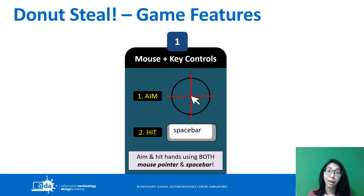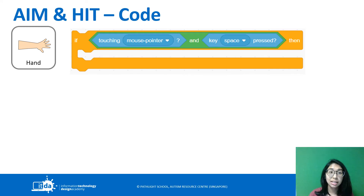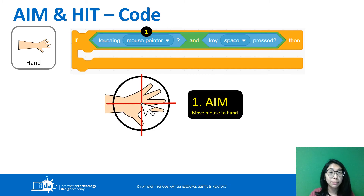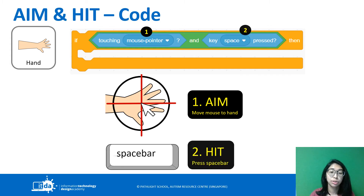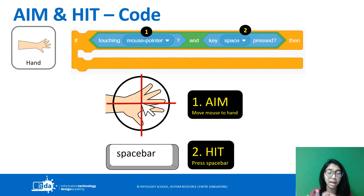The first feature is the aim and hit code — we're going to use mouse and keyboard control. On your hand sprite, all of them will have this condition: if touching mouse pointer and key space pressed. So if you aim the target at the hand sprite by moving your mouse to it, and at the same time press your spacebar to hit the hand, the hand will get shot. We'll see the full coding and explanation during the teacher's demonstration video.